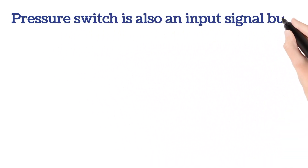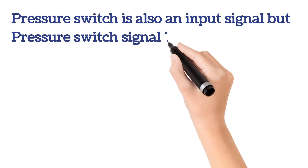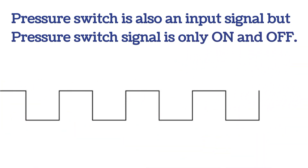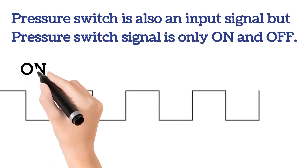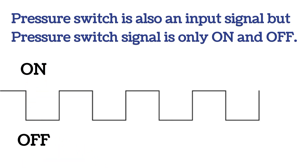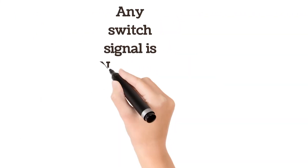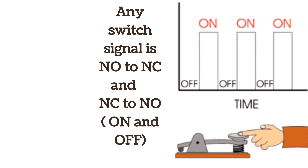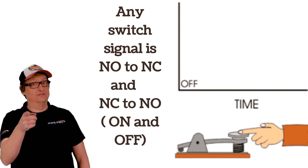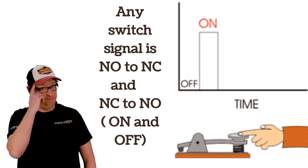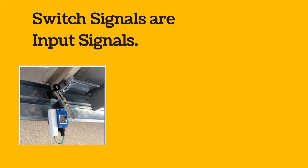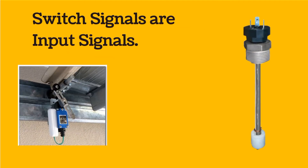The pressure switch signal is also an input signal, but it is only ON and OFF. As shown in the image, the signal has no value between ON and OFF. Any switch signal is only ON and OFF — when the switch actuates its signal is ON, and when it is not actuated it is OFF. Switch signals include limit switch, level switch, proximity switch, and similar devices.